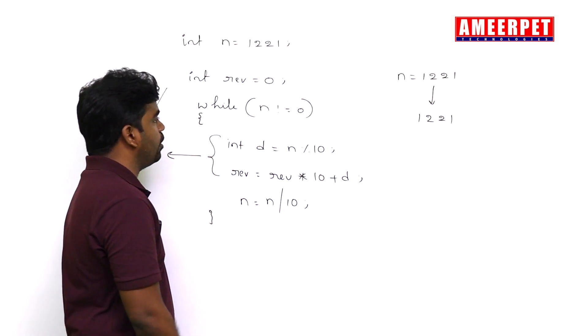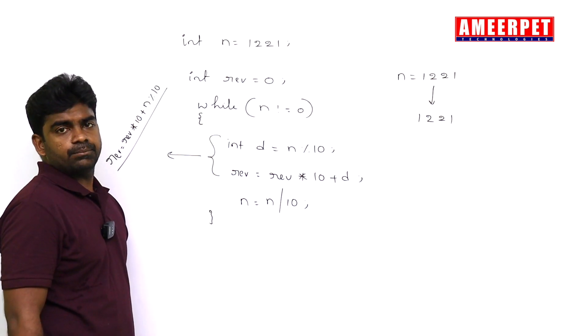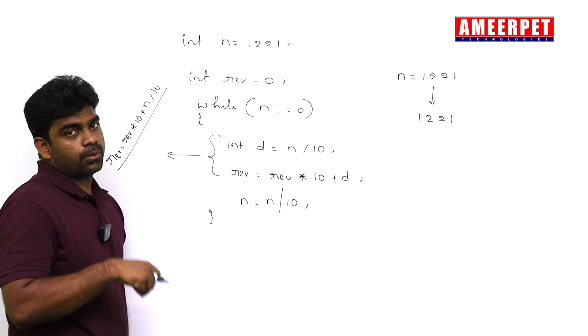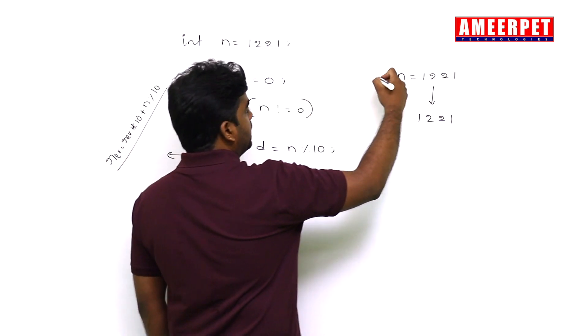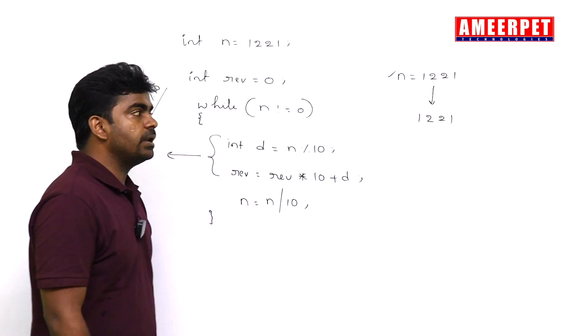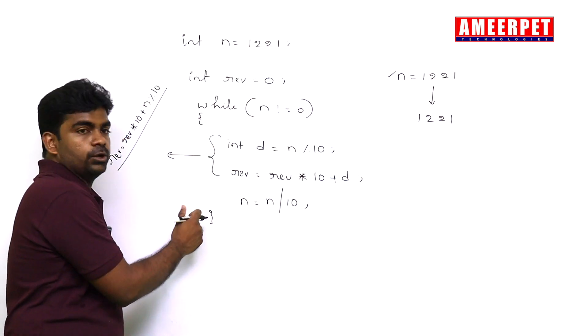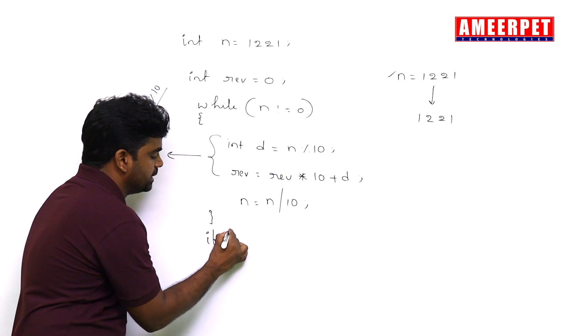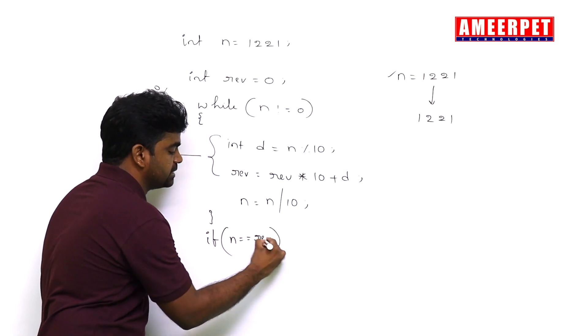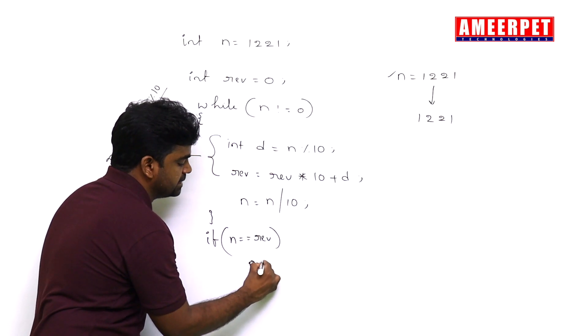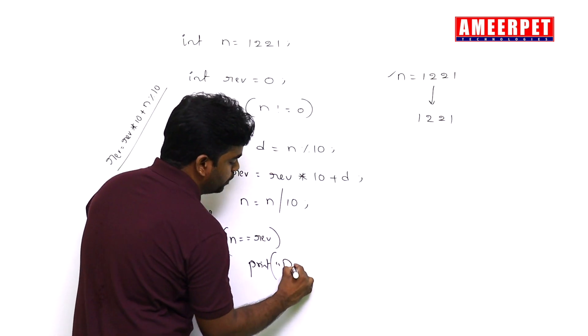After that, we are removing the last digit. This is the way of finding the reverse number for the given number. But the question is, we need to check if the given number and reverse number are both equal or not. So outside this while loop, we need to check the condition: if the given number is equal to the reverse number, then we can say that it's a palindrome number.